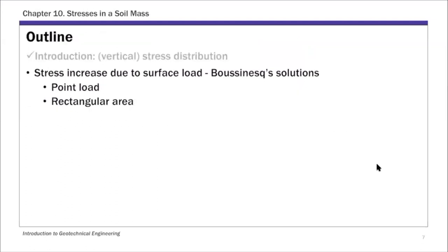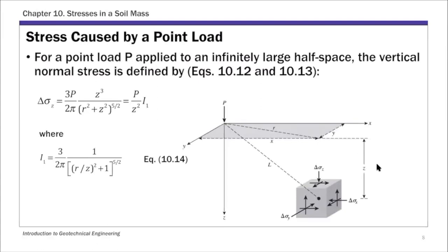To solve this stress distribution due to surface load, we're going to use the Boussinesq solution. Boussinesq solved this stress distribution by assuming soil is an infinitely large half-space elastic media and provided an analytical solution. We have this point load P at the surface, and the Boussinesq solution gives us an expression to estimate the vertical stress increase Delta Sigma Z at any location below the surface.